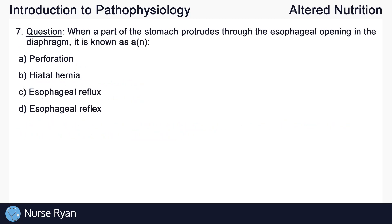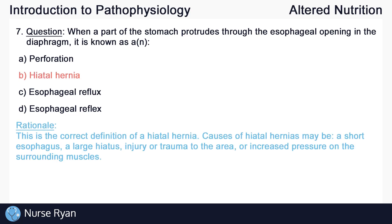Question number seven: when a part of the stomach protrudes through the esophageal opening in the diaphragm, it is known as? The answer is B, a hiatal hernia. Causes of hiatal hernias may be a short esophagus, a large hiatus, injury or trauma to the area, or increases in pressure to the surrounding muscles.